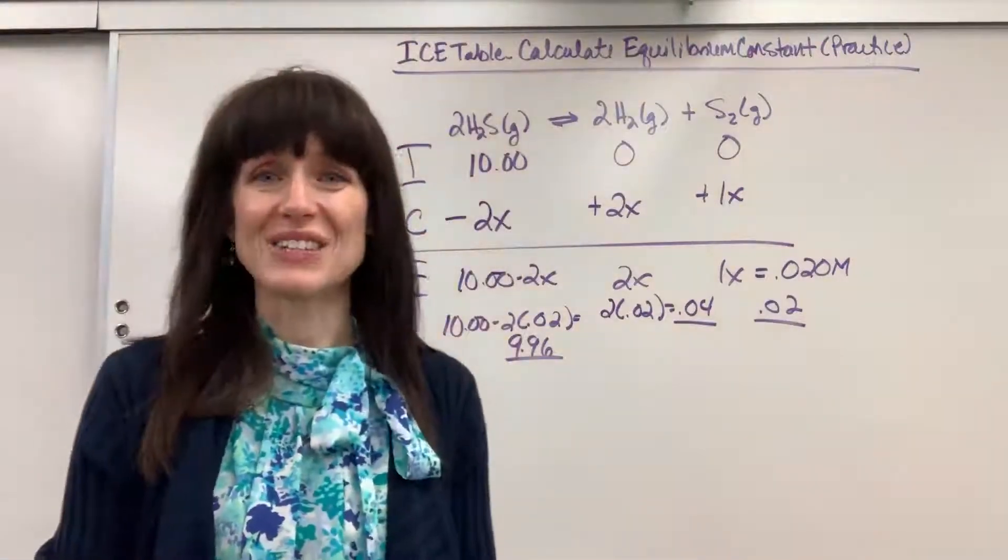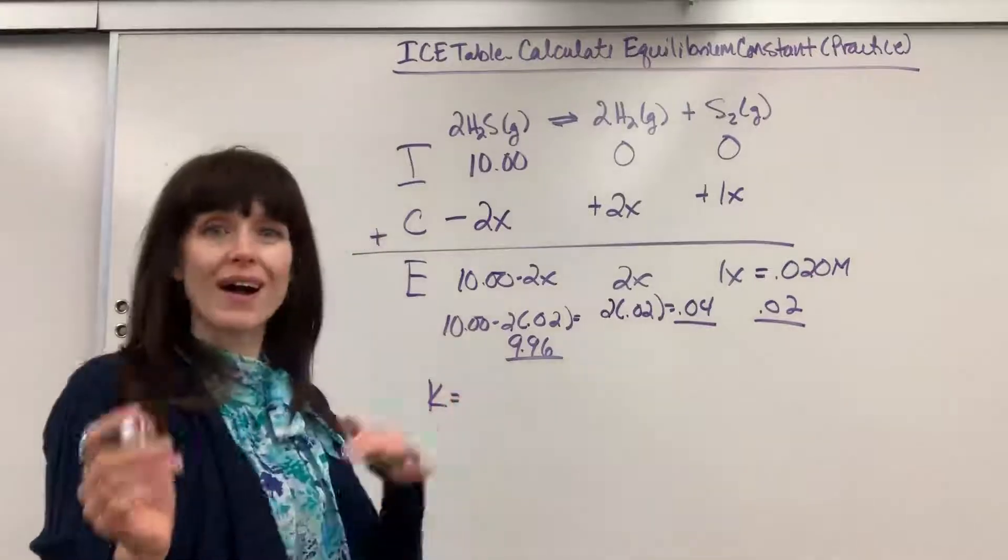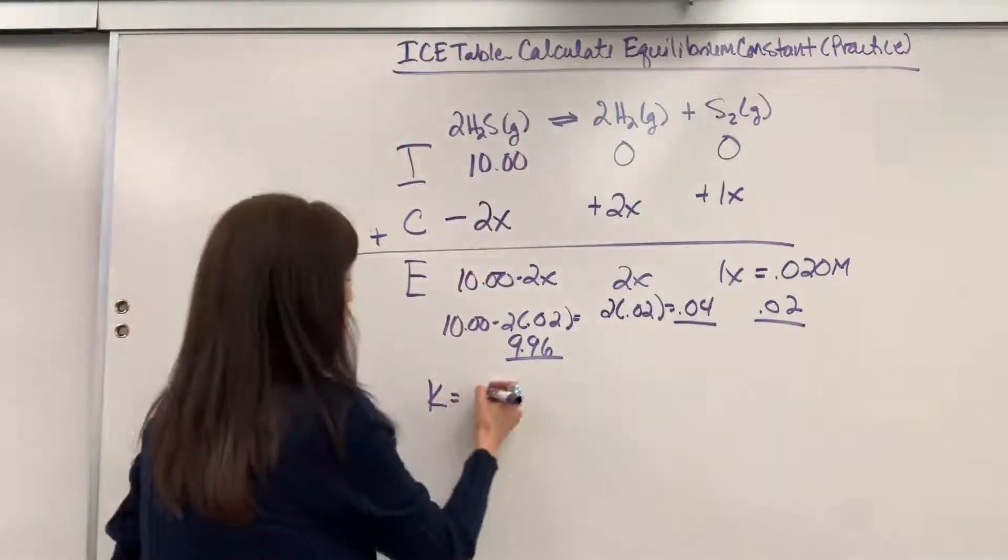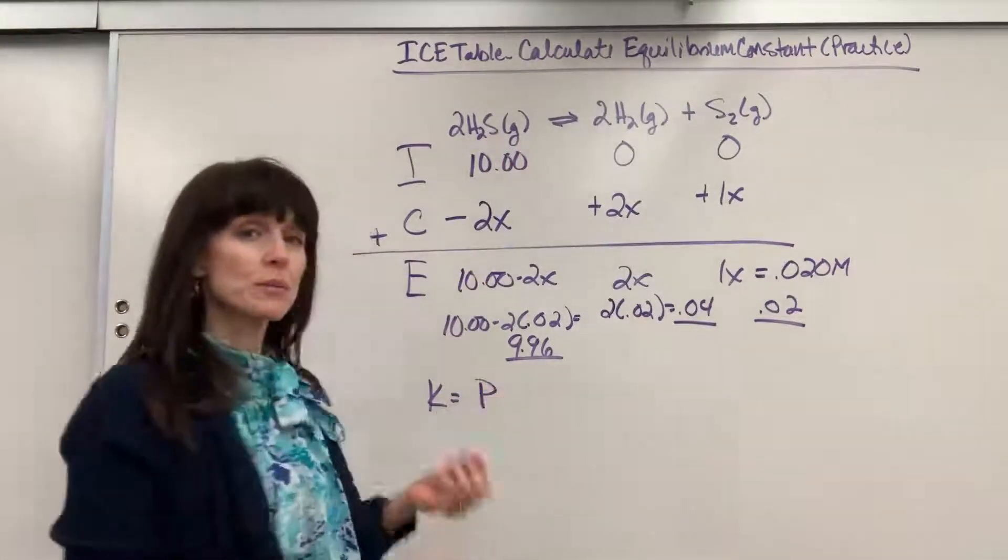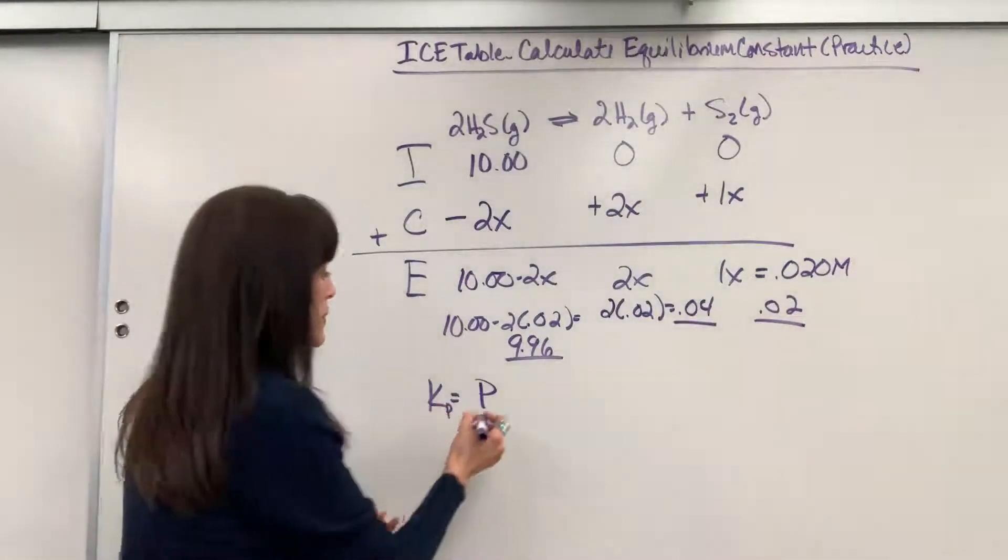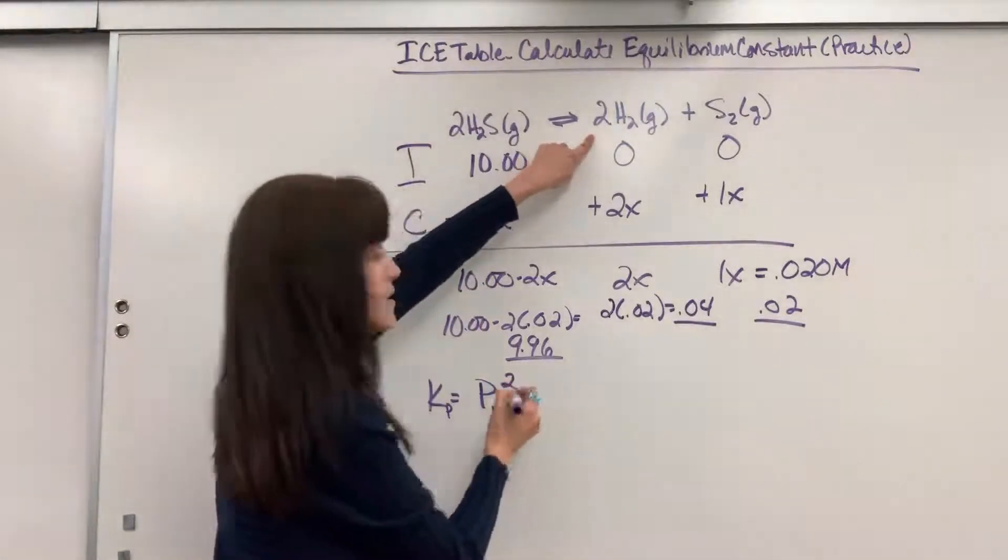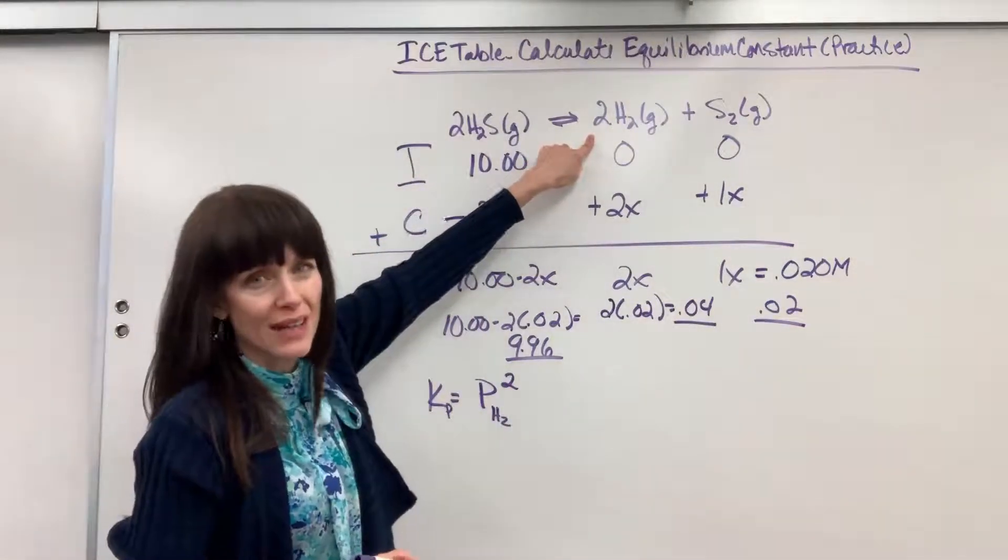So there are the equilibrium concentrations. All we have to do now is plug that into the equilibrium expression. K will equal products over reactants. So our product, be so careful, these are partial pressures, so this is going to be a Kp. The partial pressure of the hydrogen, and there's a 2, so that's squared.